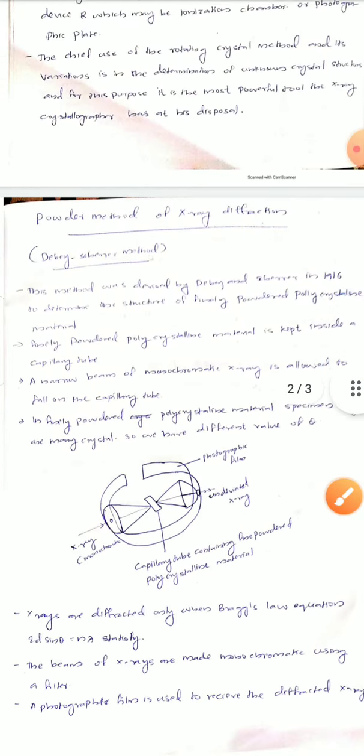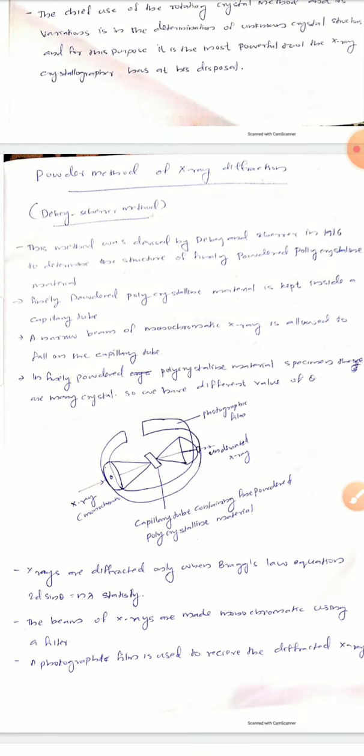The next method is the powder method of x-ray diffraction, also known as the Debye-Scherrer method. It was devised by Debye and Scherrer in 1916 to determine the structure of finely powdered polycrystalline material. In this method, the crystal is finely powdered and placed inside a capillary tube.